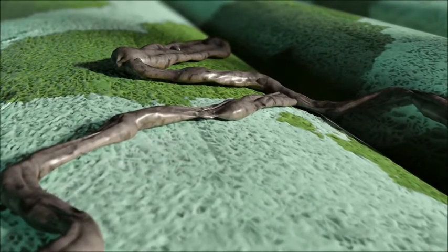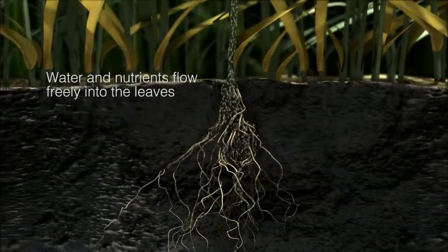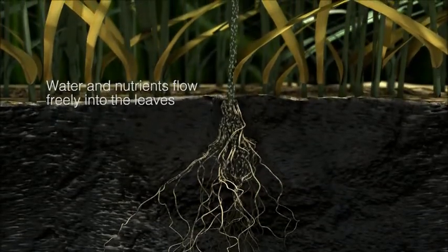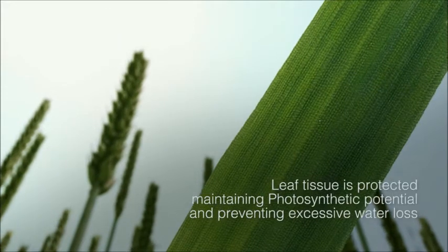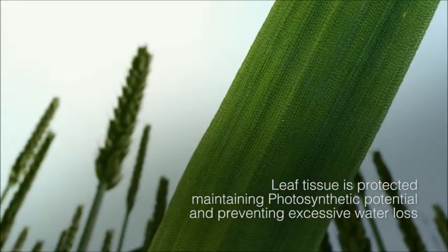By preventing the disease developing before it can cause damage, the water and nutrients can flow freely into the leaves. Leaf tissue is protected, maintaining photosynthetic potential and preventing excessive water loss.